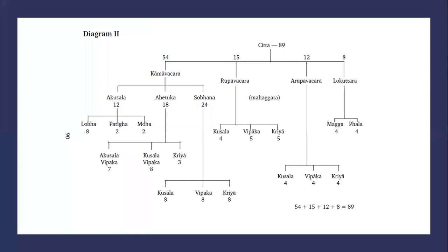The 89 chitani are first classified according to bhumi, the planes of existence. There are 54 kama vachara chitani, 15 rupa vachara chitani, 12 arupa vachara chitani, and 8 lokuttara chitani. Kama vachara refers to sense sphere consciousness, rupa vachara to fine material sphere consciousness, arupa vachara to immaterial sphere consciousness, and lokuttara to supramundane consciousness. These add up to the 89 chitani.